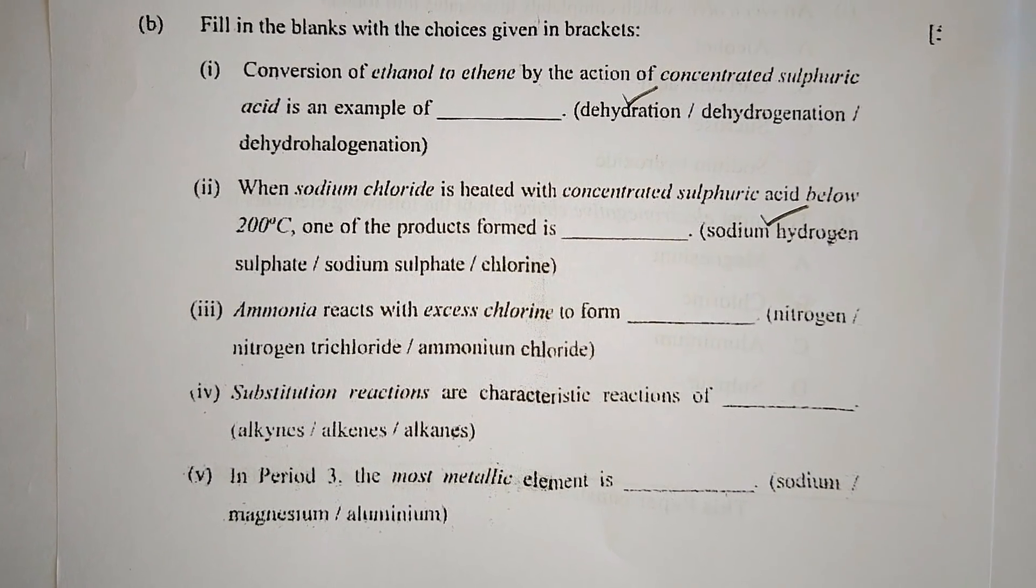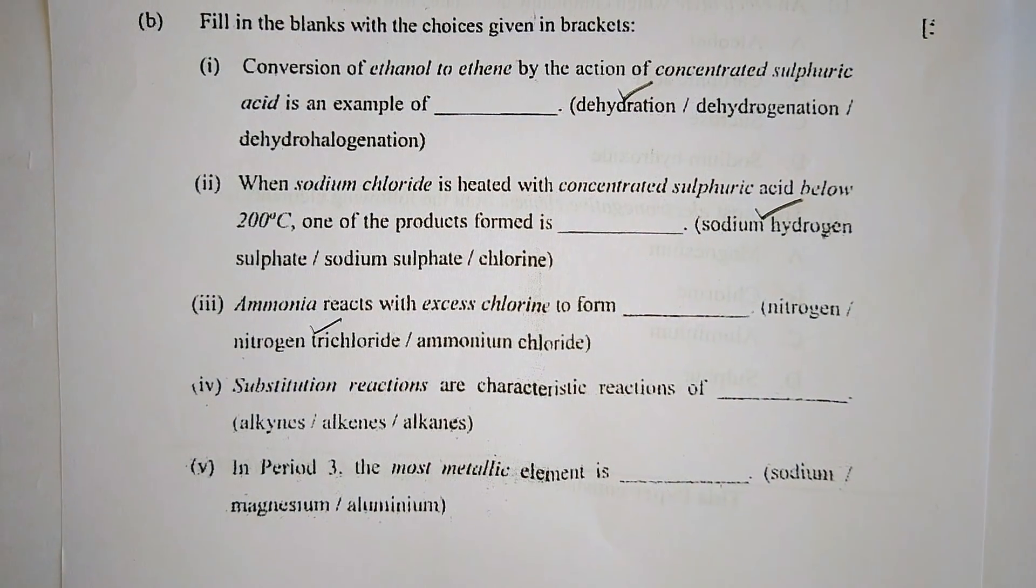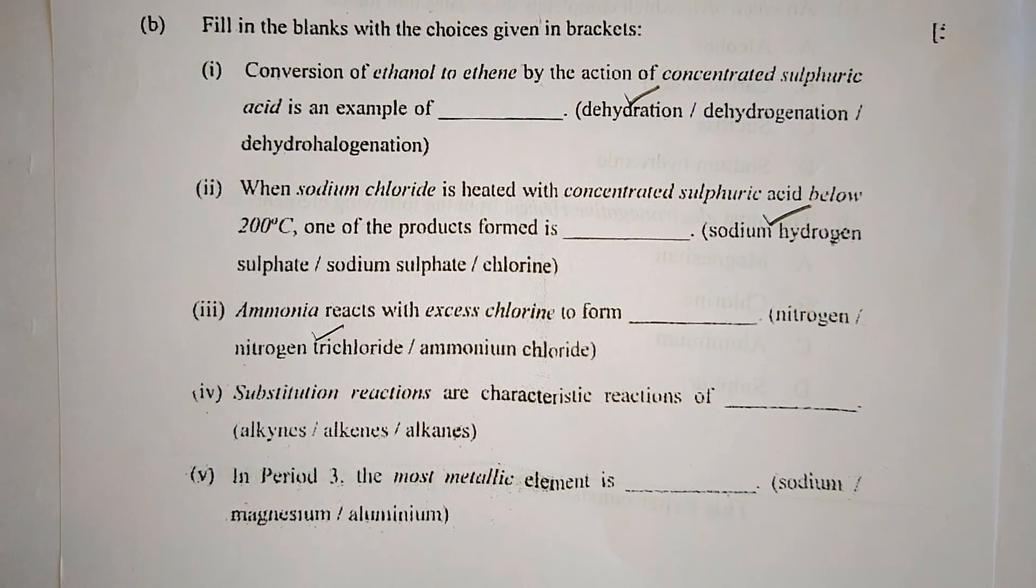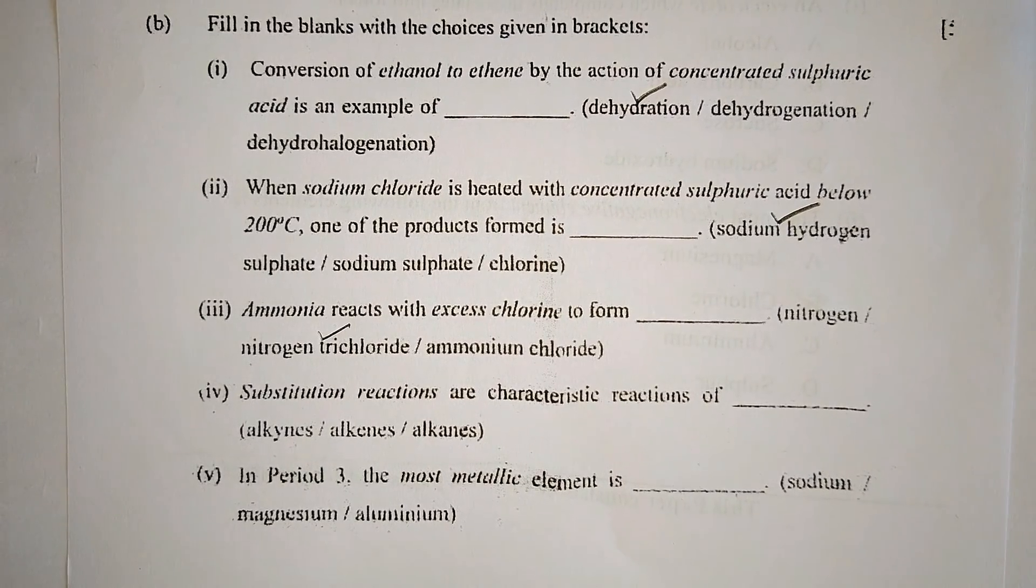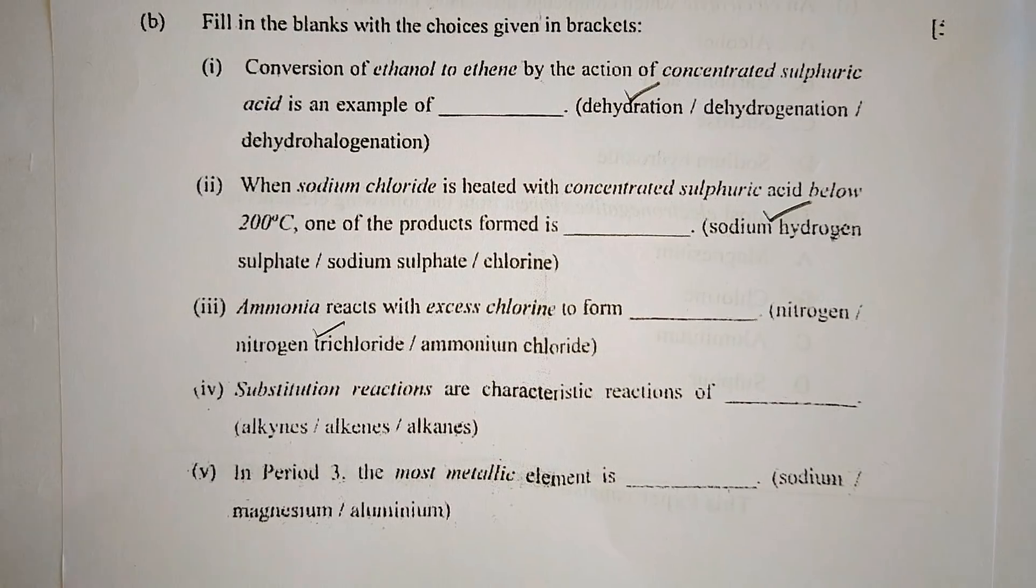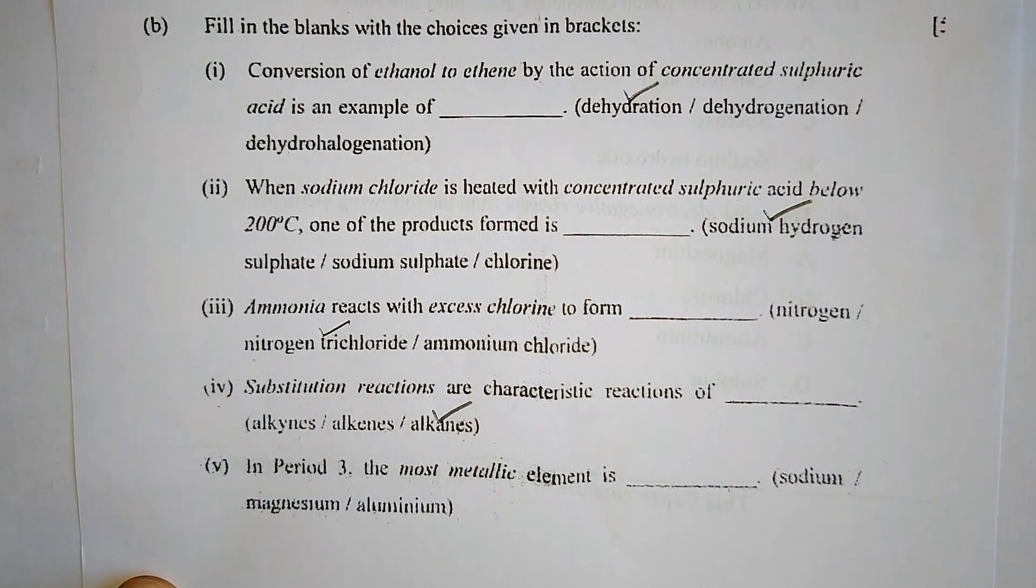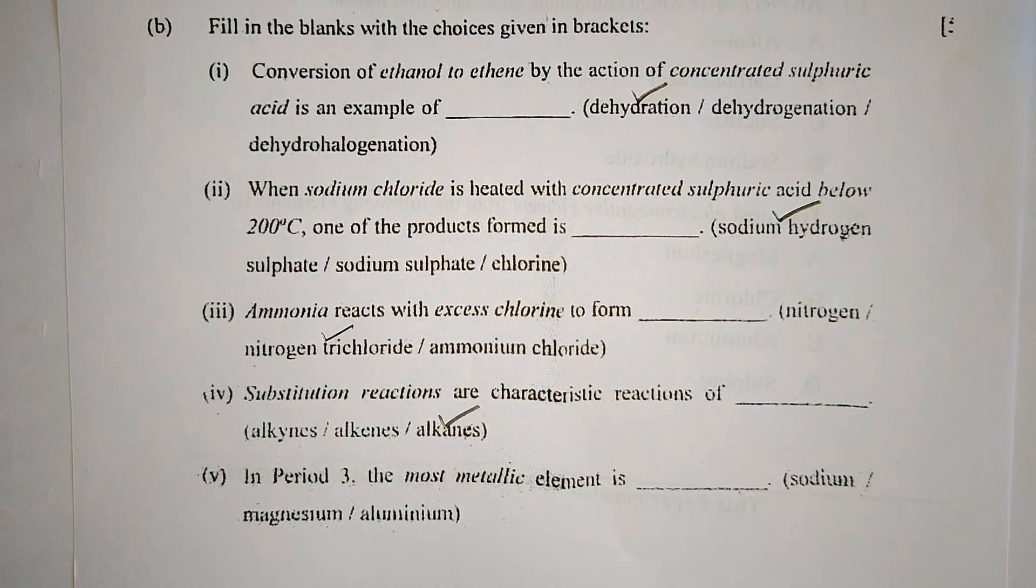Number three: Ammonia reacts with excess chlorine to form nitrogen, nitrogen trichloride, or ammonium chloride. The correct answer is nitrogen trichloride.